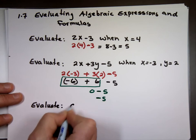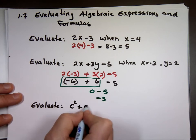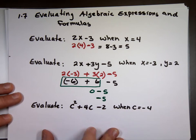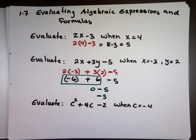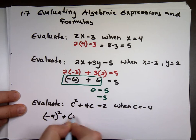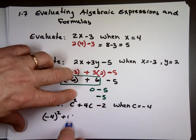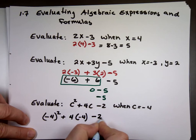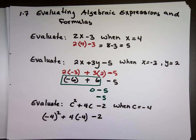Evaluate c squared plus 4c minus 2 when c equals negative 4. C equals negative 4. That's negative 4 squared plus 4 times the negative 4 minus the 2. Now, what is negative 4 squared? Negative 16. Try again. Positive 16.